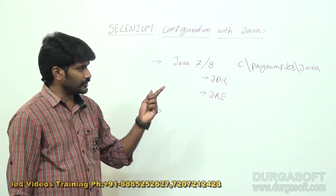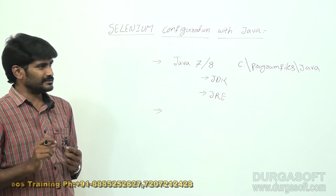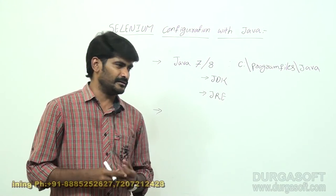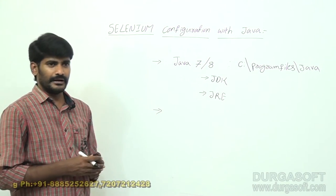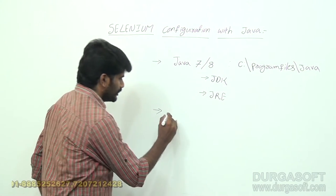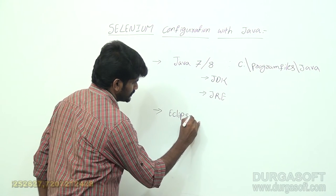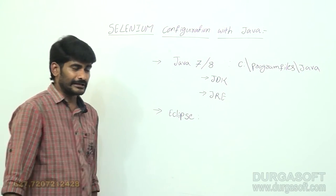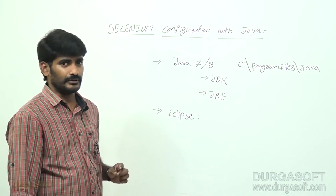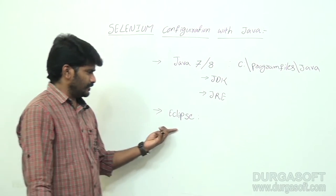Second, in case of automation we have to write scripts, so we need some editor. There are different editors: Notepad, NetBeans, IntelliJ, and others. In our Selenium we are using Eclipse. Eclipse is an editor responsible for writing the program. You can Google it and download Eclipse.